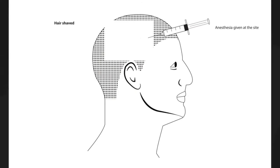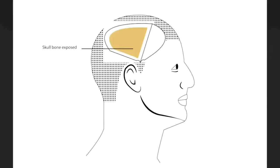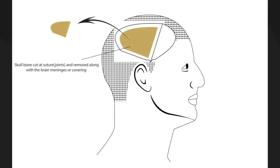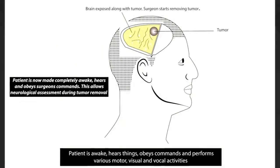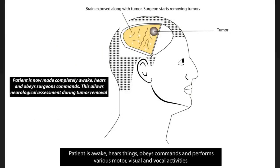Let me explain exactly what happens during awake craniotomy. Hair is shaved and the incision site is infiltrated with local anesthesia. The skin flap is elevated and reflected, exposing the underlying bone. The bone is removed and the underlying brain with its coverings are exposed. The brain coverings, called meninges, are opened and the brain is exposed along with the tumor.